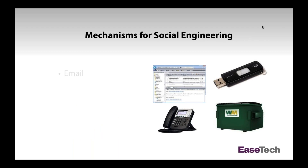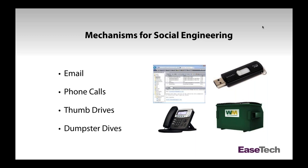There are different mechanisms for social engineering. We're focusing mostly on email because 90% of all compromises occur as a result of email phishing. Some more targeted spear phishing is done with combinations of email and phone calls. In some cases, thumb drives are used, and criminals have also been known to dumpster dive — going through the trash to find information — to use in social engineering. Email is number one, but phone calls also participate, especially in CEO fraud.